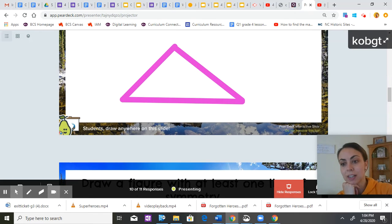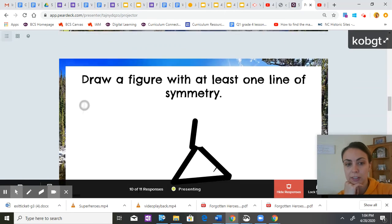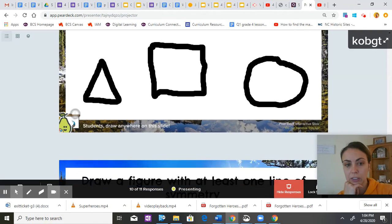Now this triangle isn't symmetrical. One side's a little bit longer than the other but we get the point. A triangle would have one of those, at least one line of symmetry. Good job.